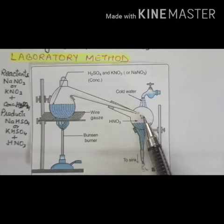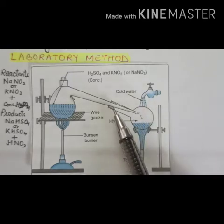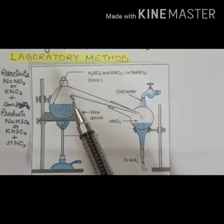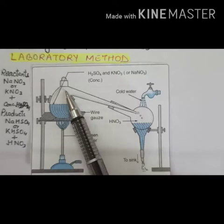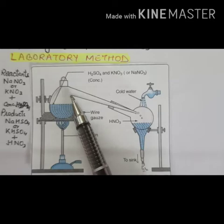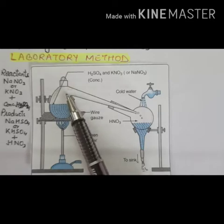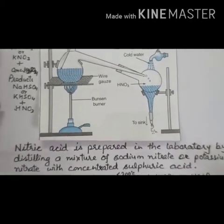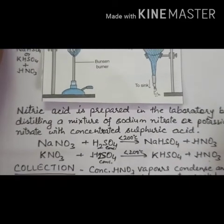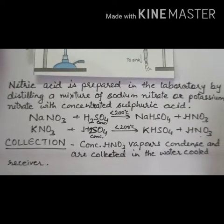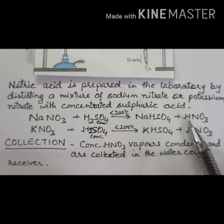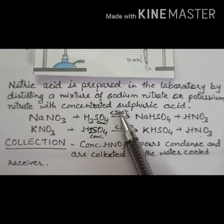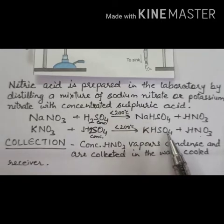The nitric acid prepared in this method is yellowish-brown in color. Pure nitric acid is colorless, but the acid obtained in the laboratory is slightly yellowish-brown. This is because the acid decomposes and gives out nitrogen dioxide, which has a yellowish-brown color and remains dissolved in the nitric acid. The equation: sodium nitrate or potassium nitrate reacts with concentrated sulfuric acid at below 200°C to give NaHSO4 and HNO3, or KHSO4 and HNO3 respectively.